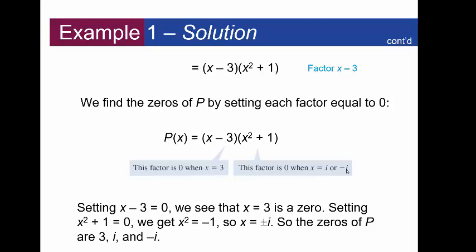The zeros are 3, i, and -i. You can see the 3 is a real number, and then we have two complex numbers here - the i and the -i, the imaginary unit there.